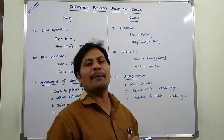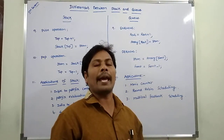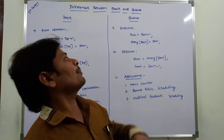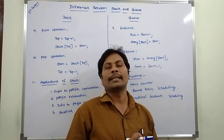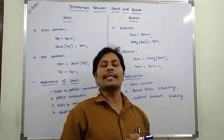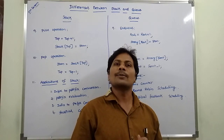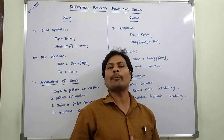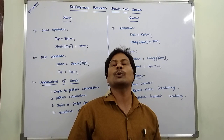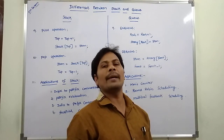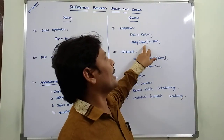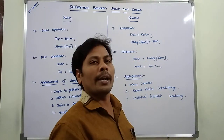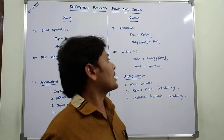What are the operations that can be performed on queue? First is NQ — enqueue is used to insert an element into the queue. First, we have to increment the rear pointer. Then, the item is inserted: array[rear] = item. Our item is inserted at the rear pointer of the array.